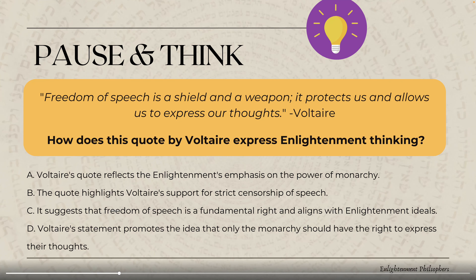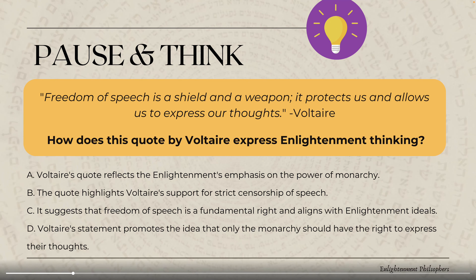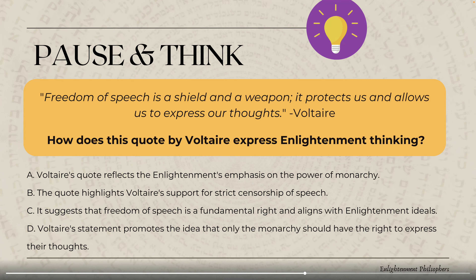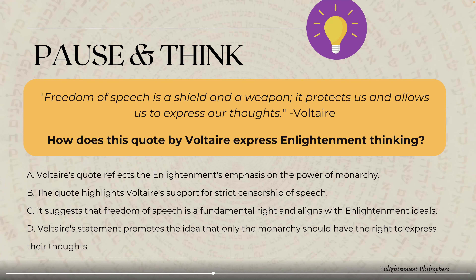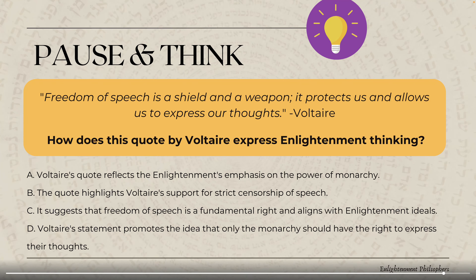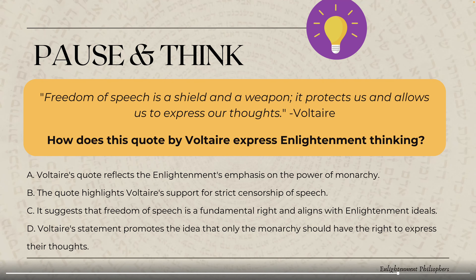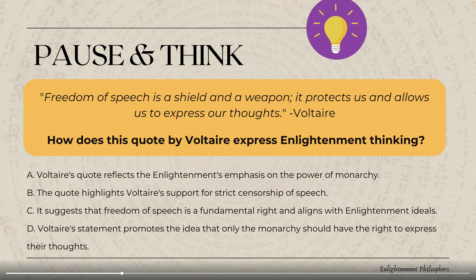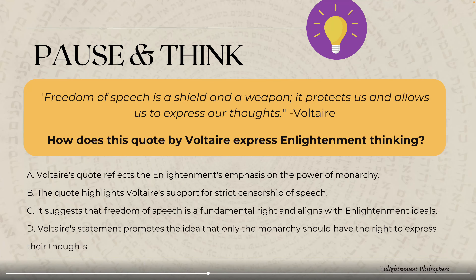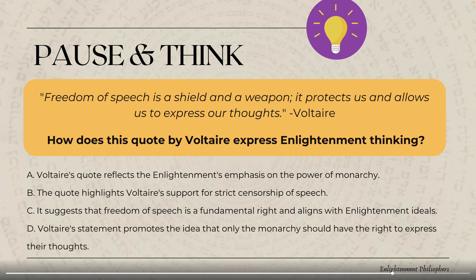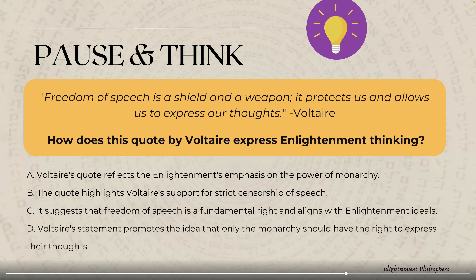Pause and think: Voltaire's quote reads, 'Freedom of speech is a shield and a weapon. It protects us and allows us to express our thoughts.' How does this express Enlightenment thinking? The answer is C — it suggests that freedom of speech is a fundamental right and aligns with Enlightenment ideals. Voltaire is expressing his philosophy on freedoms, specifically freedom of speech as a fundamental natural right, which aligns with Enlightenment principles of natural rights.